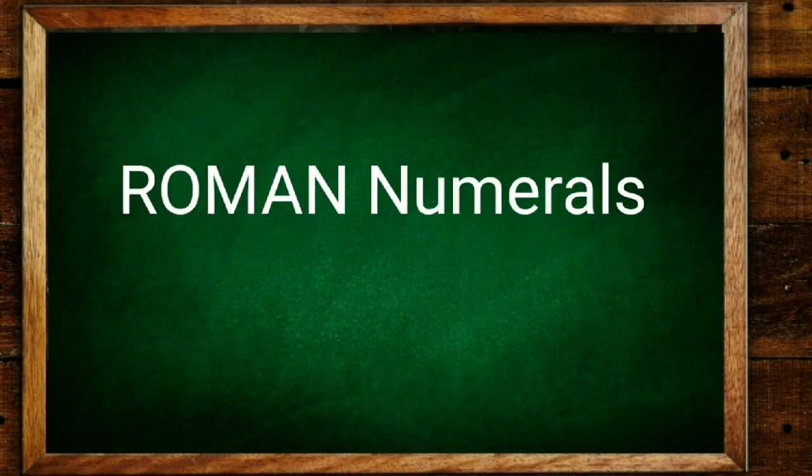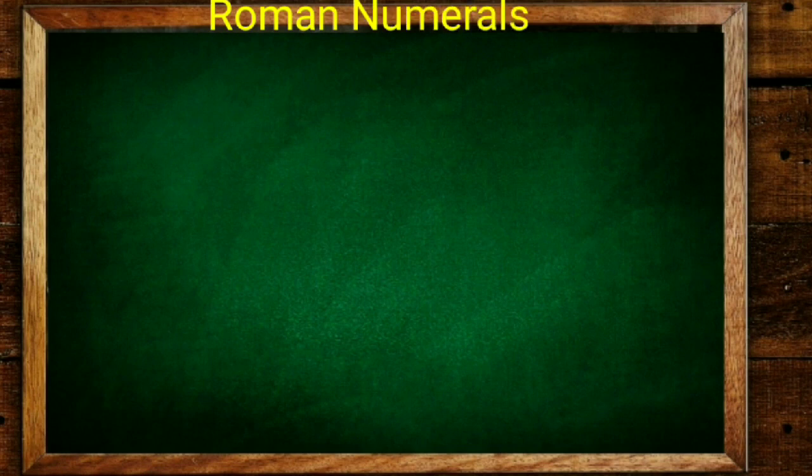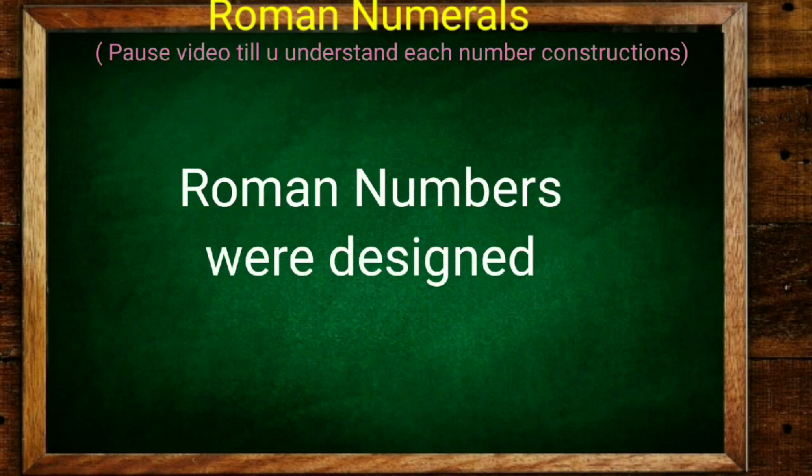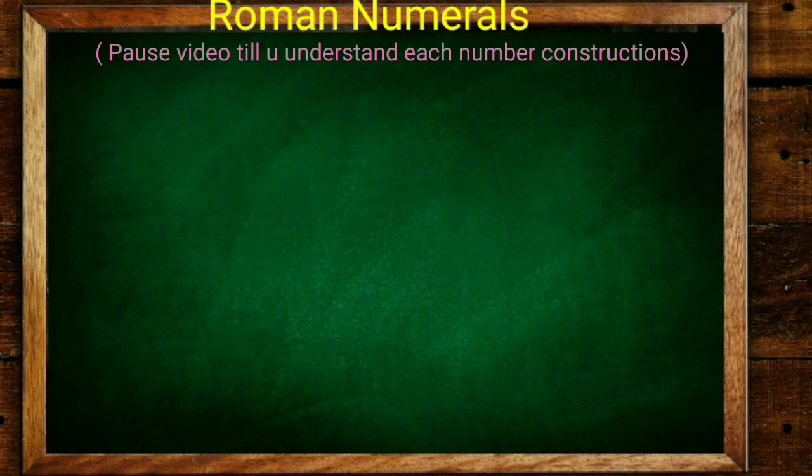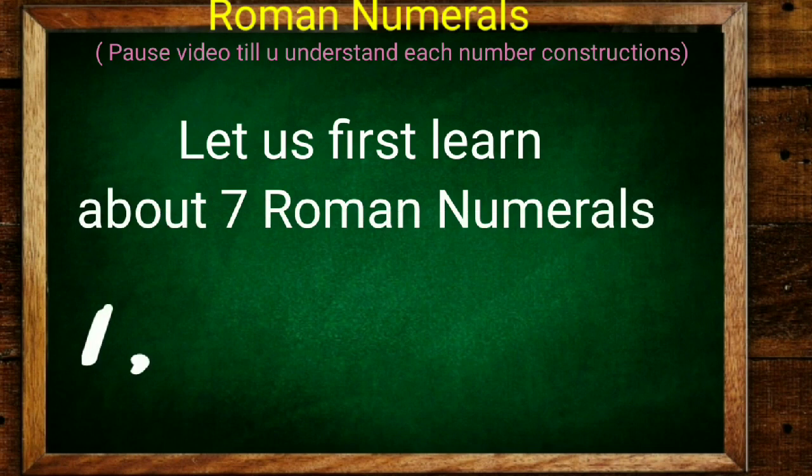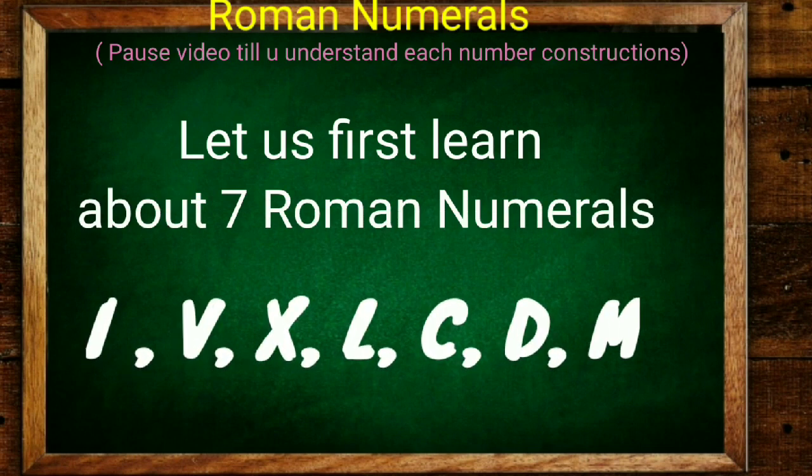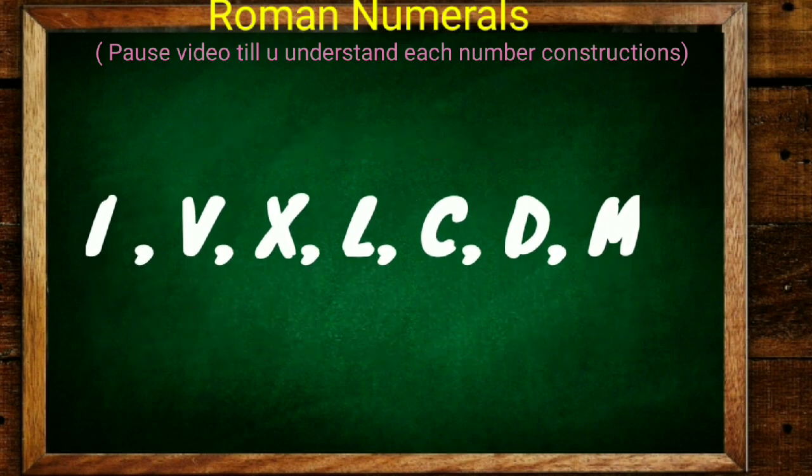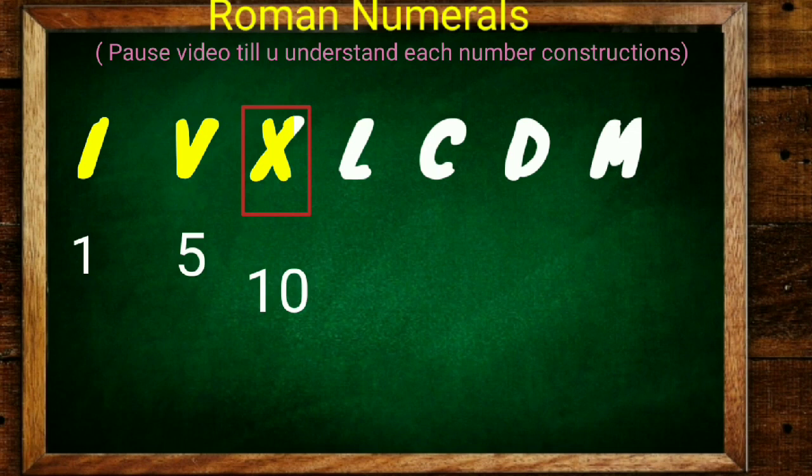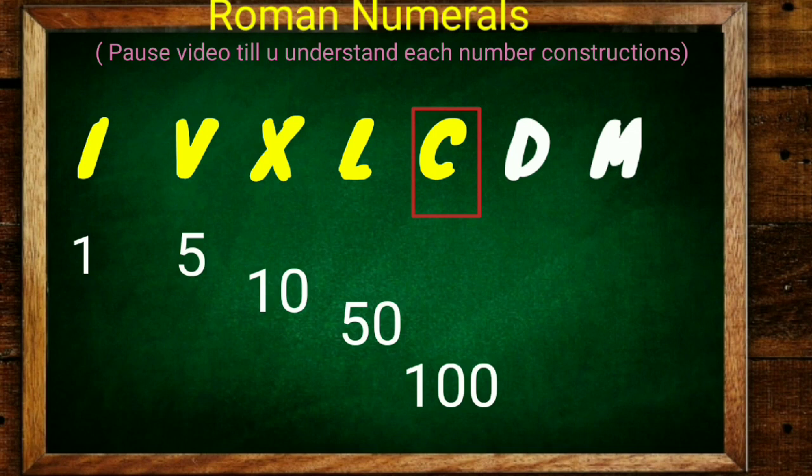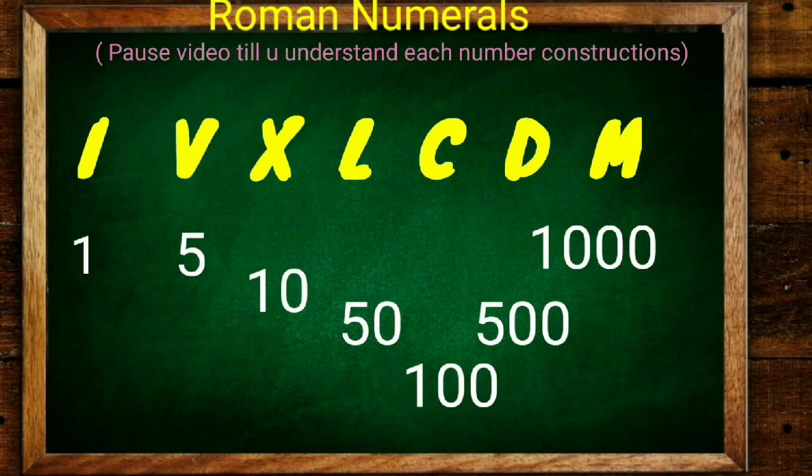Now we'll learn about Roman numerals. Let's see. Roman numerals are numbers designed in a unique way. Let us first learn about basic Roman numerals. They are: I is 1, V is 5, X is 10, L is 50, C is 100, D denotes 500, and M is 1000.